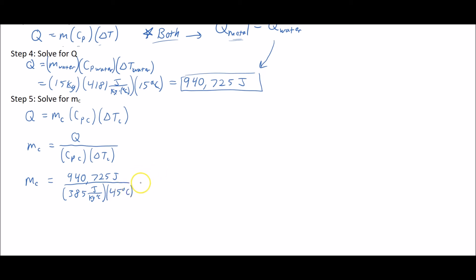When we calculate that out, the degrees Celsius cancel and the joules cancel, leaving kilograms. We end up with about 54.3 kilograms as the mass of our copper block.